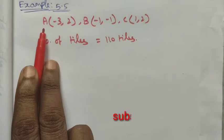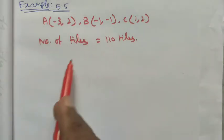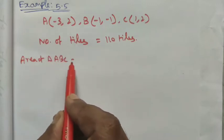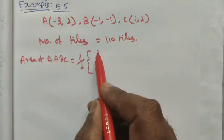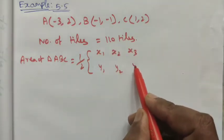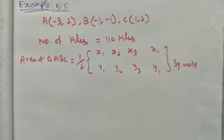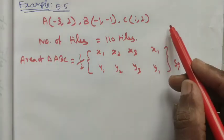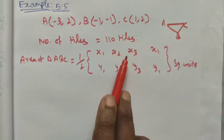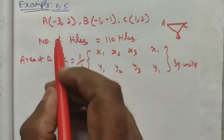The given vertices are taken as A, B, C. The number of tiles is 110. The area of the triangle formula is: Area of triangle ABC = half into the determinant with coordinates (x1, y1), (x2, y2), (x3, y3), and then again (x1, y1) — in square units. First we find the area of one tile's triangle, then multiply by 110.